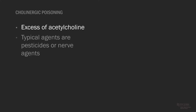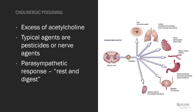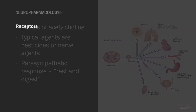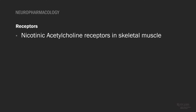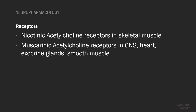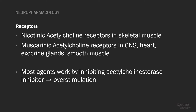Moving on to cholinergic poisoning — this is caused by an excess of acetylcholine. Typical agents causing cholinergic poisoning are pesticides or nerve agents, and this leads to an exaggerated parasympathetic response, or the rest-and-digest phase. Receptors include the nicotinic acetylcholine receptors in skeletal muscle, and muscarinic acetylcholine receptors in the CNS, heart, exocrine glands, and smooth muscle. Most agents work by inhibiting acetylcholinesterase, leading to increased acetylcholine at the neuromuscular junction and overstimulation of the acetylcholine receptor. Some organophosphate pesticides also undergo aging — permanently binding to the acetylcholinesterase — leading to a prolonged toxidrome.